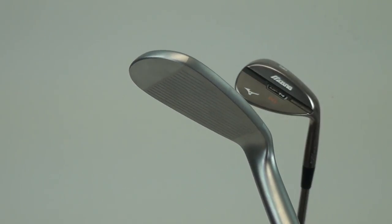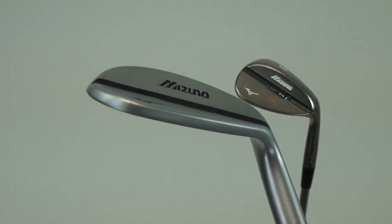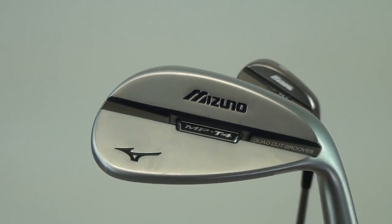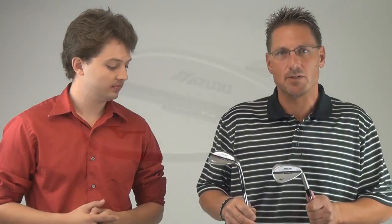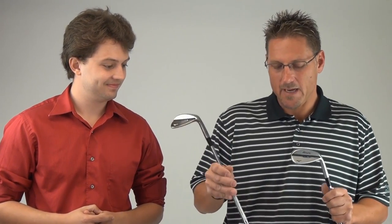The wedge also features the dynamic gold spinner shaft. With the changes in the groove designs by the USGA over the last two years or so, the design with the spinner wedge shaft is to help create a little bit more spin, based on the player's strength and angle of attack, helping with a little bit steeper angle of attack with the shaft.